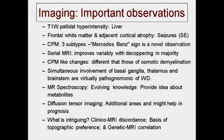Frontal white matter and adjacent cortical atrophy with seizures may be important. We described three types of CPM for the first time. Serial MRI improves variably with decoupling therapy in the majority. CPM-like changes are different from osmotic demyelination. Simultaneous involvement of basal ganglia, thalamus, and brainstem is virtually pathognomonic of Wilson's disease. Spectroscopy is evolving knowledge providing ideas about metabolites. DTI reveals additional areas not seen by conventional imaging. Clinical–MRI discordance is intriguing — some patients have very severe forms without proportionate MRI changes. Genetic–MRI correlations have not been studied much.